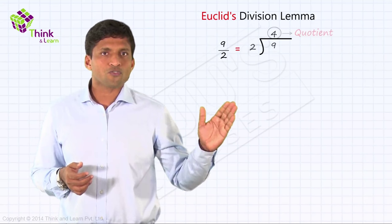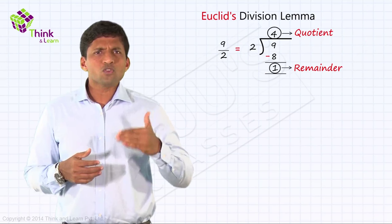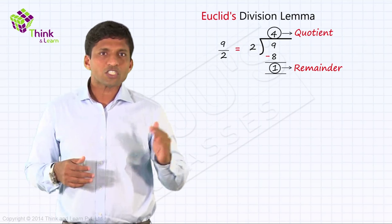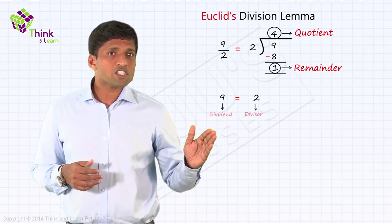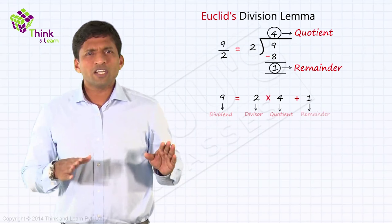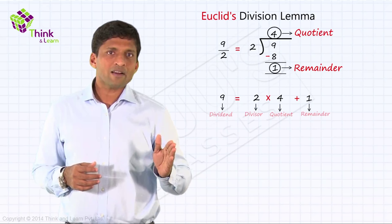So there is one more way to write this. Rather than writing it like this division, you can write it as 9 = 2 × 4 + 1, where 2 was the divisor, 4 was the quotient, plus 1. So it's just a different representation of the same thing. That is, 9 can be written as 9 = 2 × 4 + 1.